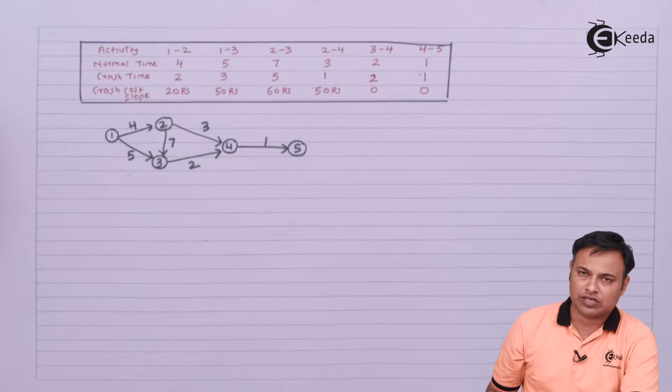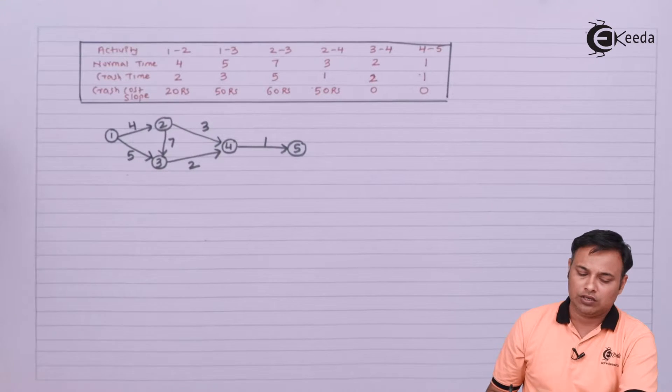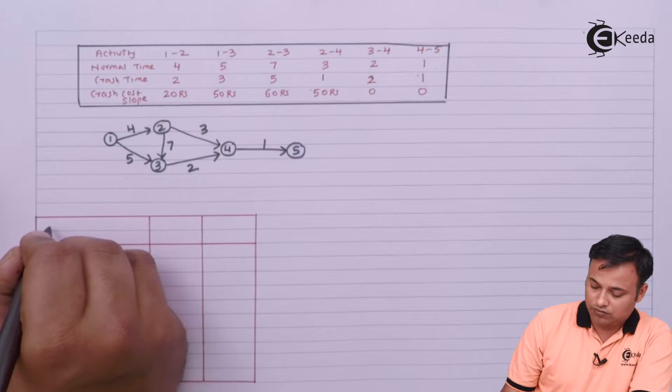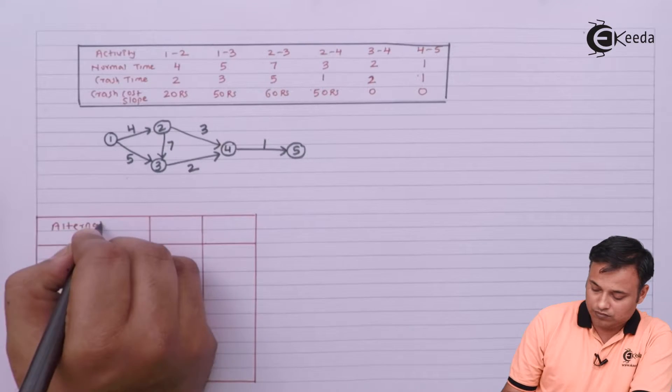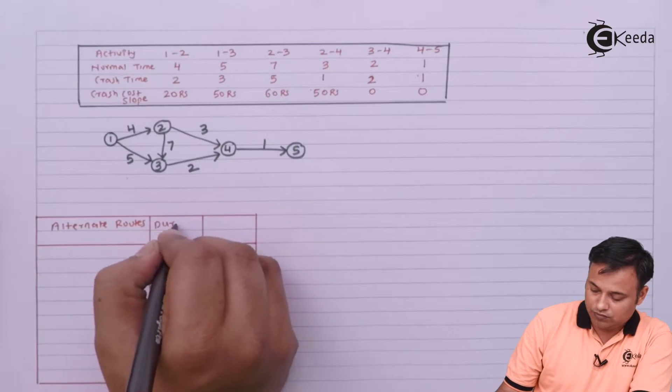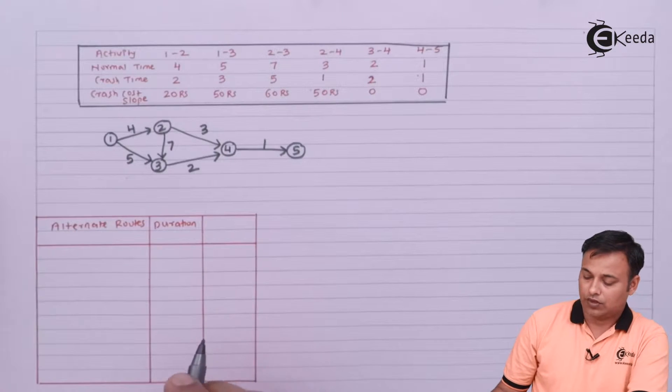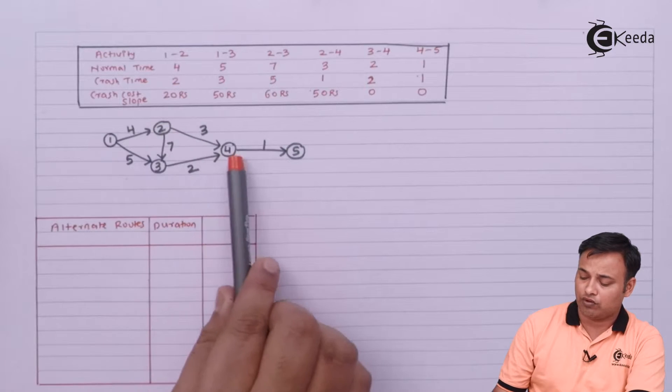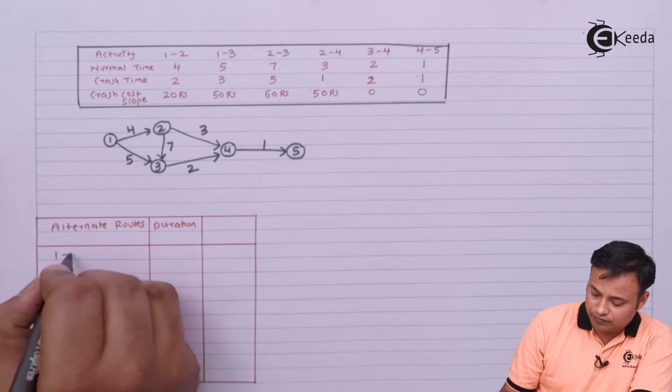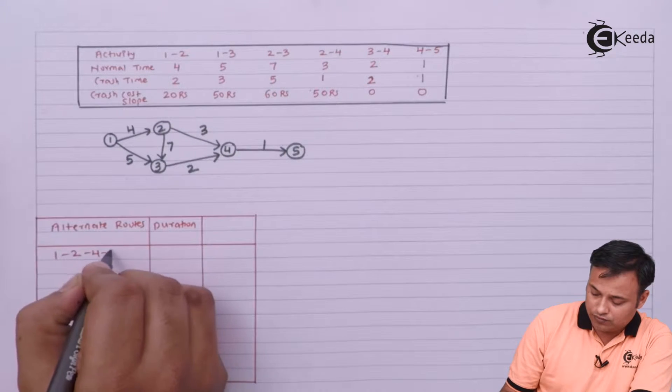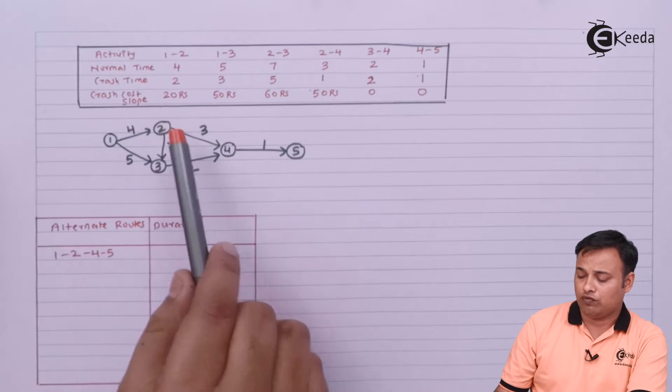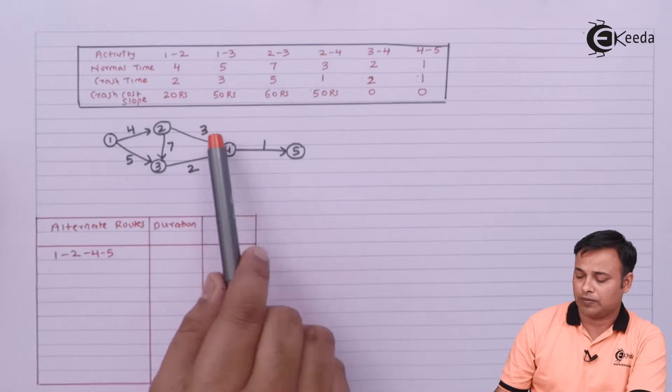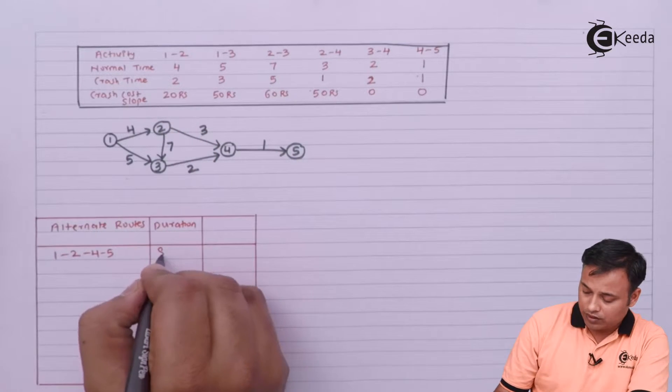Now what are the alternate routes available and how I can work out the crashing, let's see. Let's find the alternate routes. My first route will be 1-2-4-5, and 1-2-4-5 will be 4 plus 3 plus 1, which is 8.